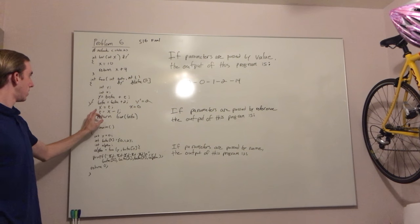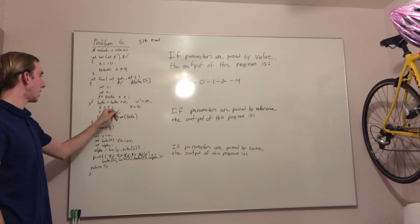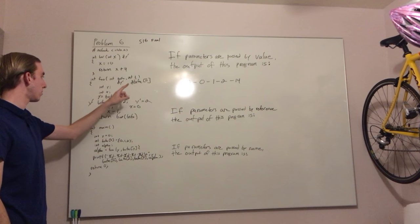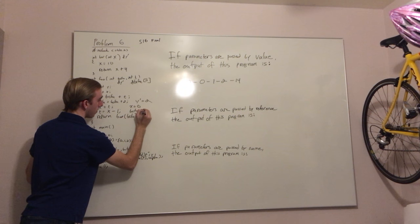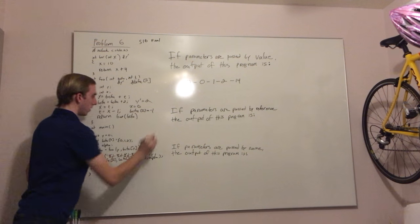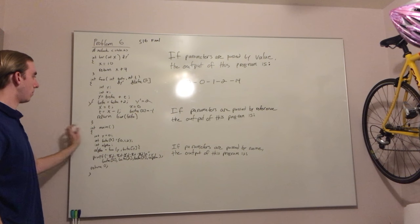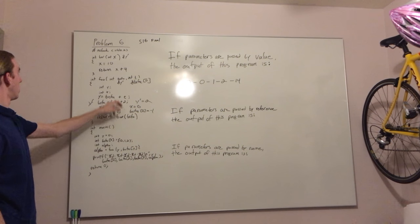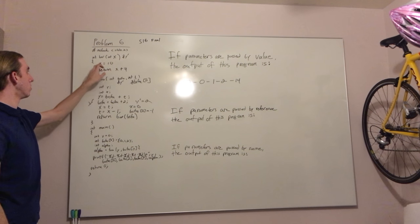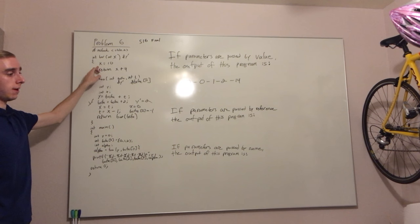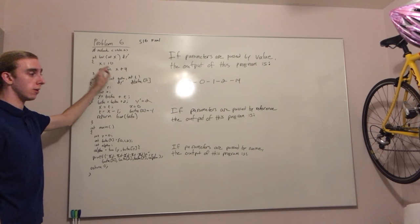And we are assigning x minus 1 to beta 0, so beta 0 is now negative 1. Then we return bar as before. In this case, we are passing a reference to y prime. So y is now getting the value of 10 and we are returning 14.